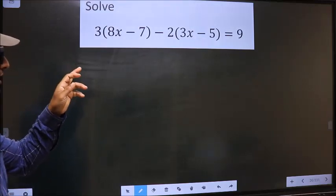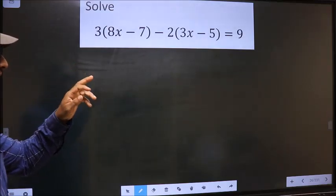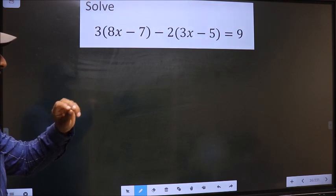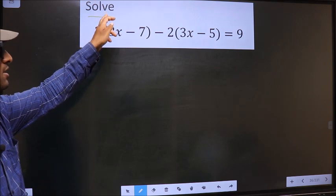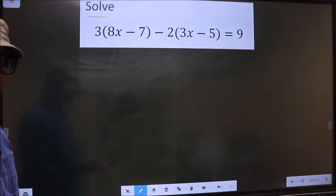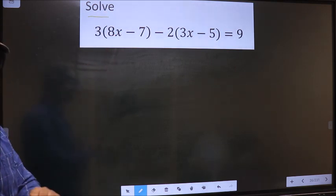Solve 3 brackets 8x minus 7 minus 2 brackets 3x minus 5 equal to 9. Here they told us to solve, which means we should find the value of x.